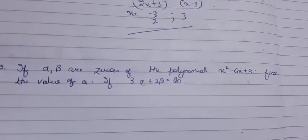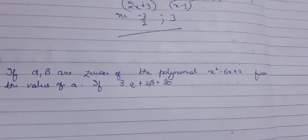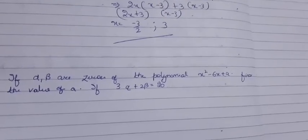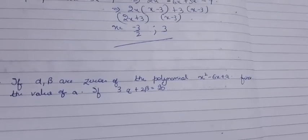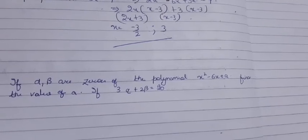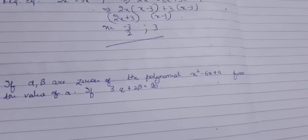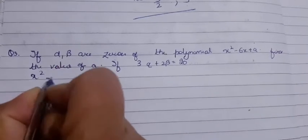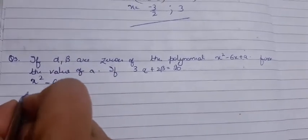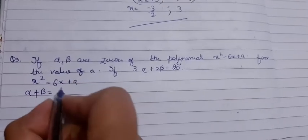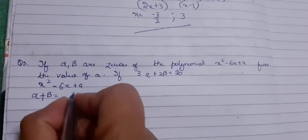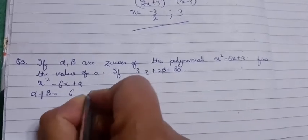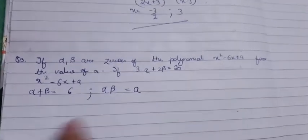Next question: If α and β are zeros of the polynomial x² - 6x + a, find the value of a if 3α + 2β = 20. First, given that 3α + 2β = 20. Now α + β = -b/a which is 6, and α·β = a/1 which is a.